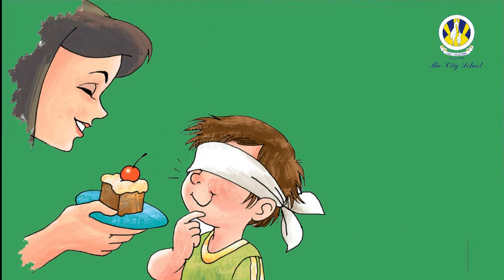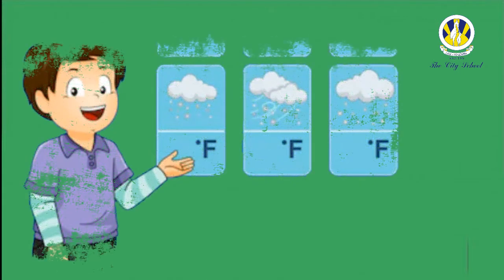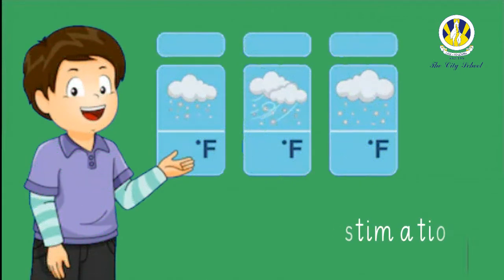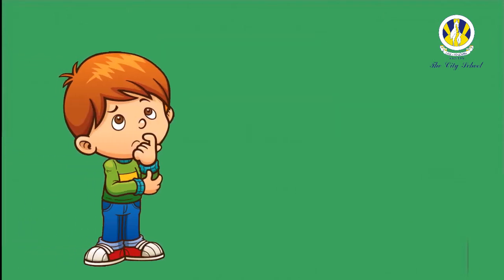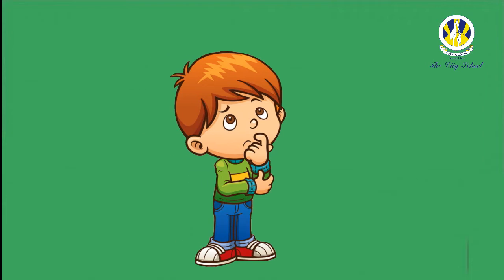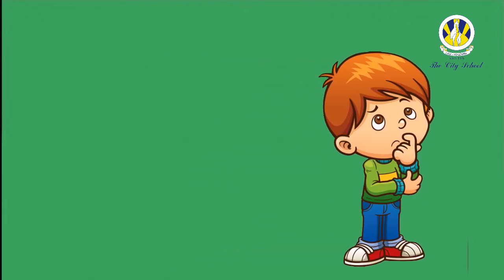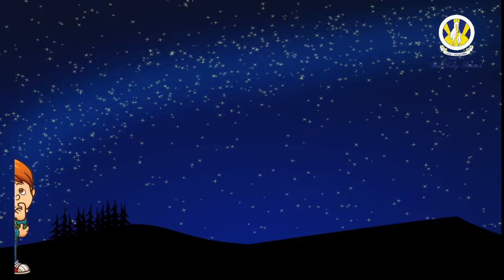A guess is a prediction based on little or no evidence and has no real method. An estimation is a prediction based on some evidence. It is a rough calculation of the value, number, quantity, or extent of something to form an opinion. You estimate when there are too many of some things to count.